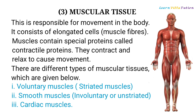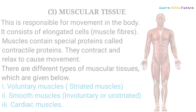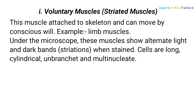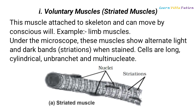Voluntary Muscles, also called Striated Muscles, are attached to the skeleton and can be moved by conscious will. An example is limb muscles. Under the microscope, these muscles show alternate light and dark bands called striations when stained.